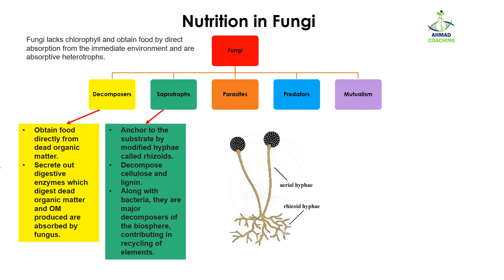The second type is saprotrophs. Saprotrophs anchor to the substrate by modified hyphae known as rhizoids. As you can see here, these are the rhizoids, and they anchor onto the substrate — just like an anchor used for big ships to stay in the sea.